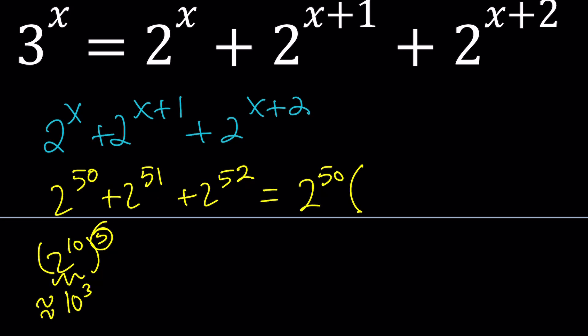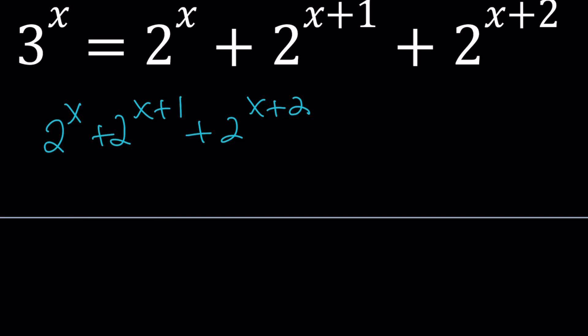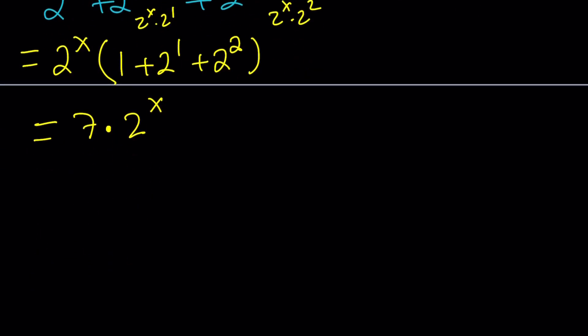For our equation, we're going to do something similar — we'll take out the smallest power of 2, which is 2 to the power of x. Because 2 to the power of x plus 1 is the same as 2 to the x times 2 to the 1, and 2 to the x plus 2 is 2 to the x times 2 to the 2nd. So when we factor out 2 to the power of x, inside the parentheses we have 1 plus 2 to the 1st power plus 2 to the 2nd power — which is 1 plus 2 plus 4, equaling 7. This is equivalent to 7 times 2 to the power of x. Now we set it equal to the left-hand side, which is 3 to the power of x.